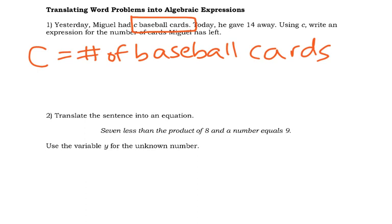And then it says today he gave 14 away. So if you give something away, that indicates subtraction. And that's what we mean by a key phrase or a keyword. Giving something away is subtraction. And so it's saying use C to write an expression for the number of cards that Miguel has left. Well remember, he starts with C cards. And if he gives 14 away, he is taking away 14 out of the cards that he originally had.